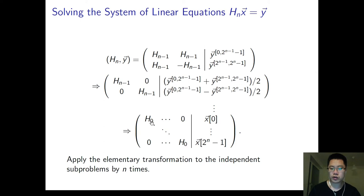We apply the elementary transformation to the independent subproblems by M times. And finally, we get H0 as the diagonal of the matrix. As H0 is exactly 1, we solve the problem.